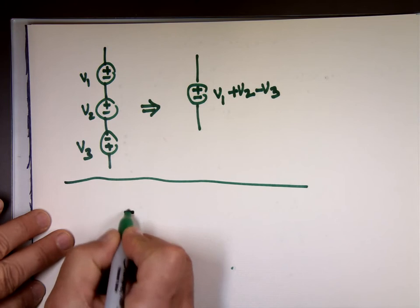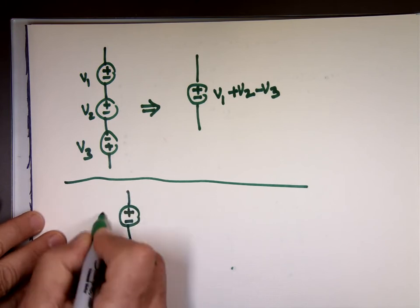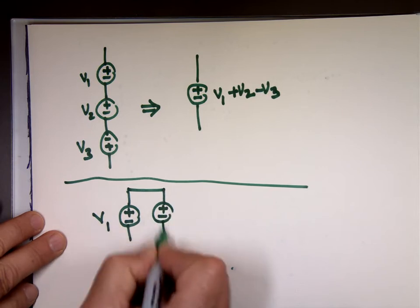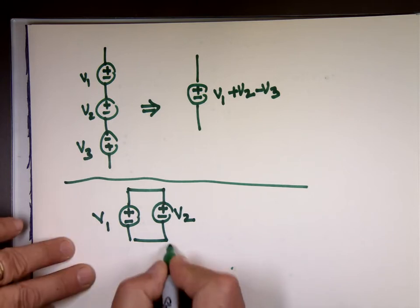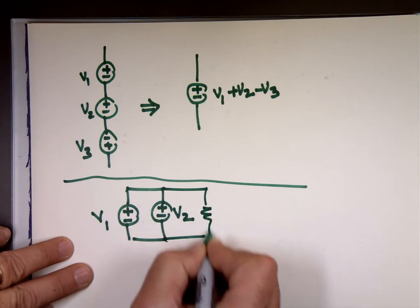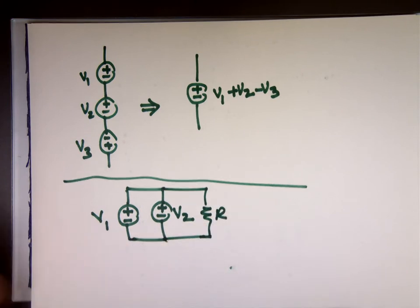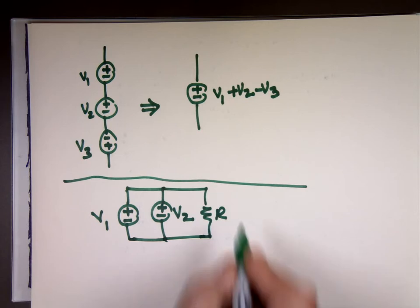What about this one? They're equal to each other. Yeah, but this one says V1, this is V2. So which one are you going to use?